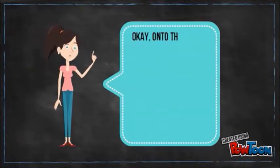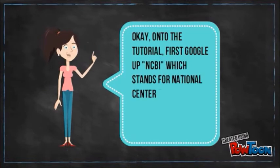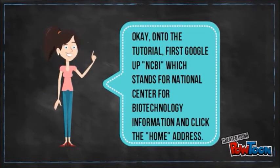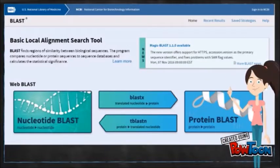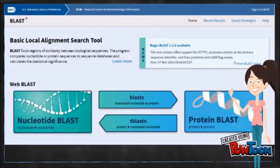So, any query? Okay, on to the tutorial. First, Google NCBI which stands for National Center for Biotechnology Information and click the home address. Here we're going to see there are 4 types of BLAST consisting of BLAST P, BLAST X, BLAST N and lastly BLAST N. The latter is the one we are going to have tutorial on.